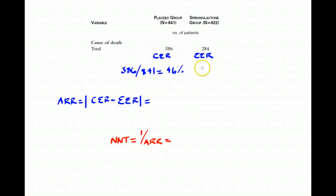My experimental event rate is the percentage of patients in the spironolactone arm that died. So there were 284 patients that died out of a total of 822 patients. And this comes out to 35%. So my experimental event rate is 35%.